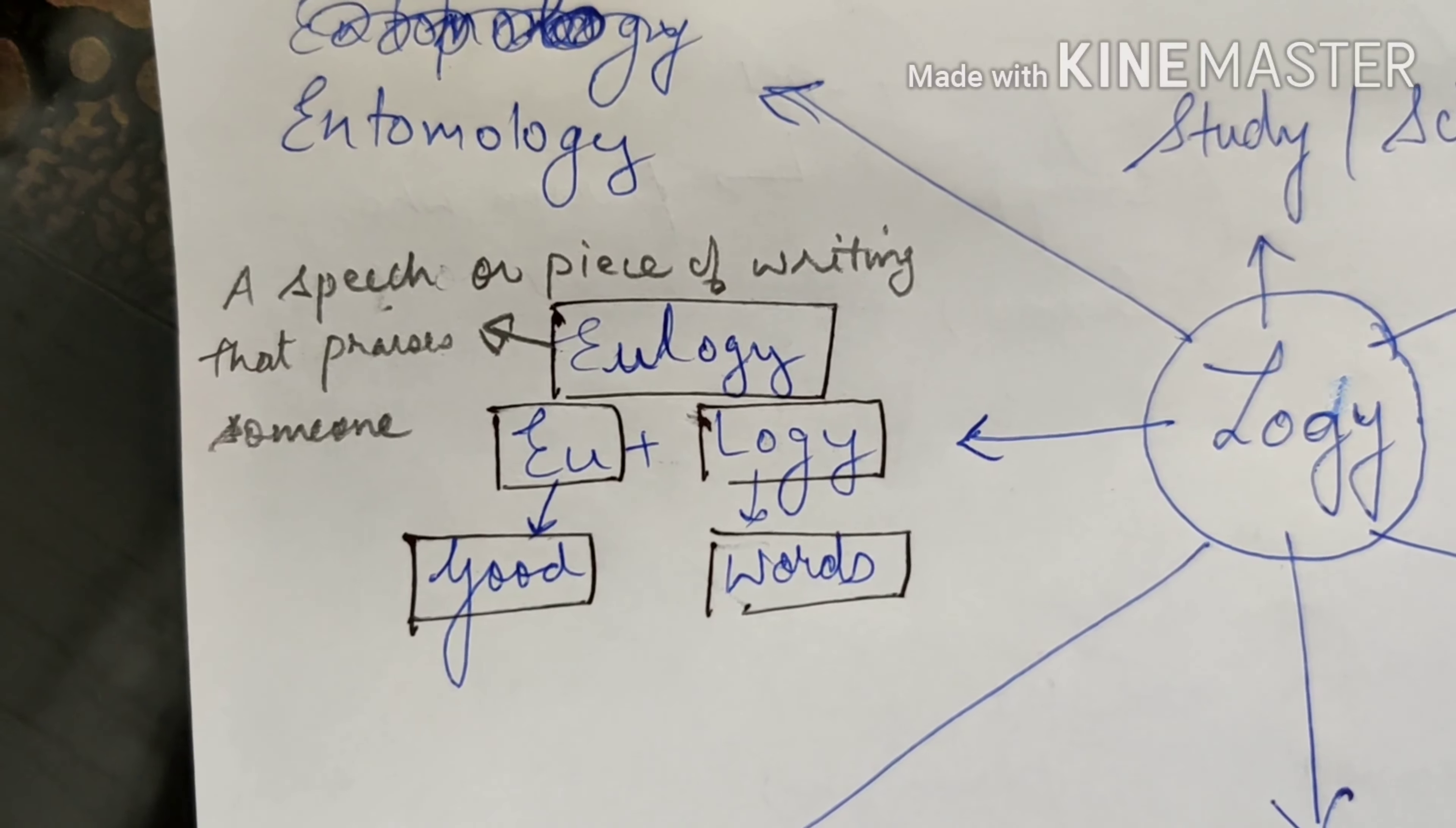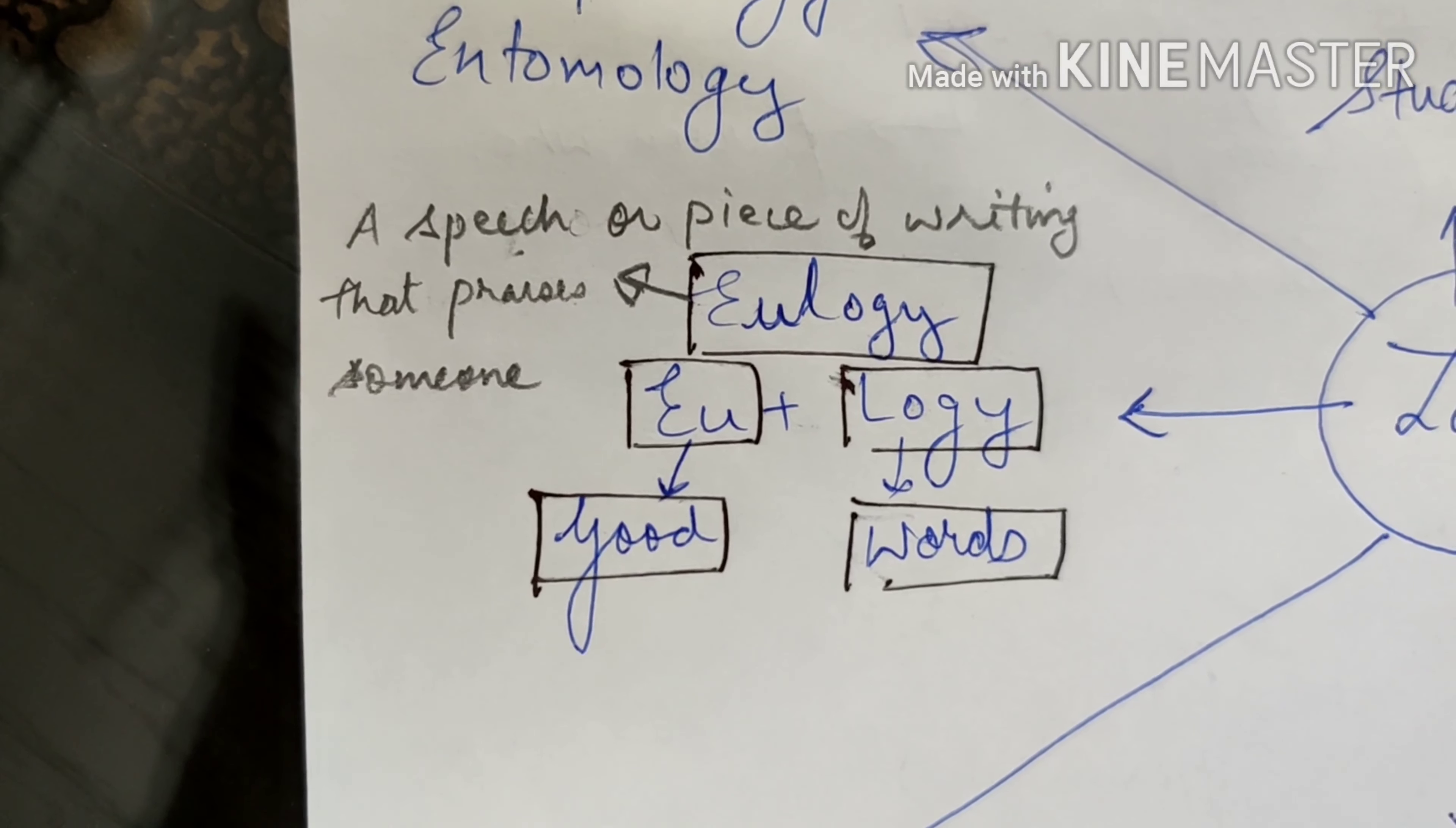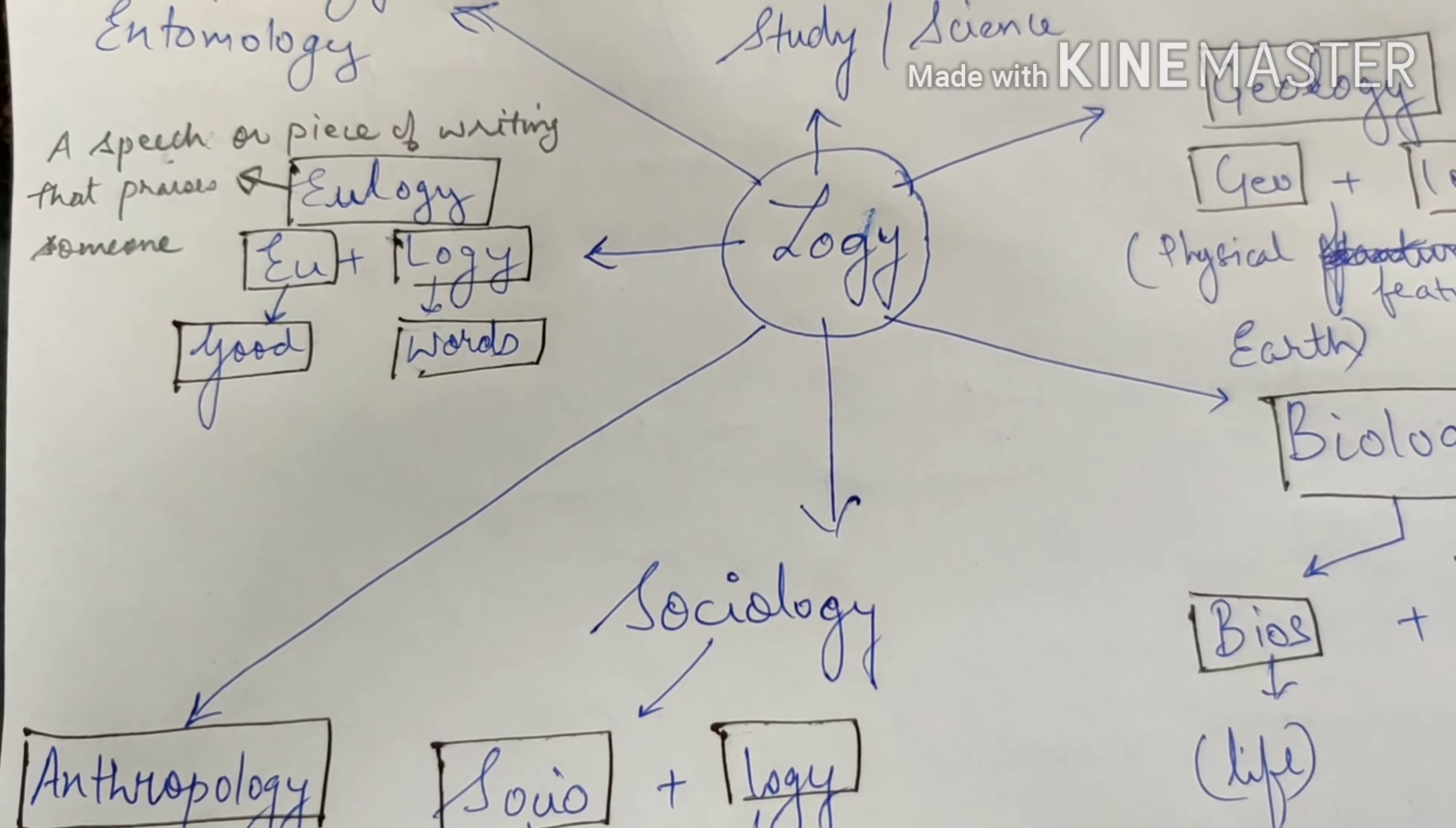And the next word is entomology. Entomology refers to study of various insects or the species of insects. We will be covering the word root of entomology in the upcoming session soon. Entomology comes from en plus tome and logi means study. Tome means to cut. En means inside. Logi is study. We will be covering the word again. So these are the words we have discussed out of logi.